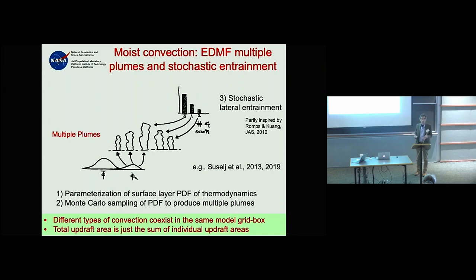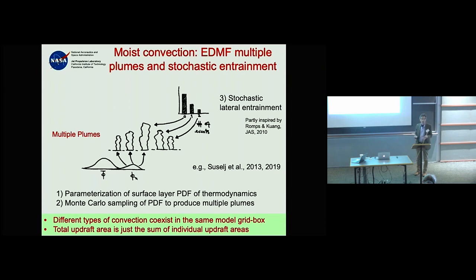Here is a shallow convection result — think of it as popcorn cumulus clouds. I'll show the vertical profiles of updraft properties from multiple plumes, then compare LES averages to the EDMF multiple-plume averages.